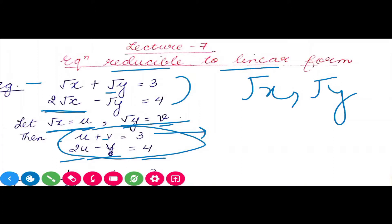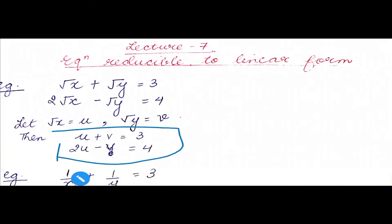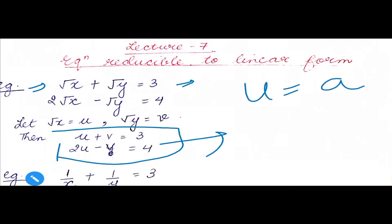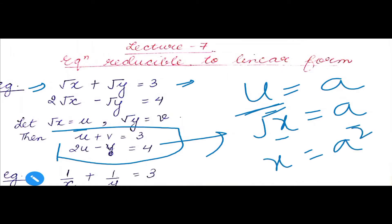When you solve this equation using any method, you will get the values of u and v. But the question asks for x and y. So, suppose you get a value for u — since u was root x, that means root x equals that value. If we square both sides, we get x equals the value squared. Similarly, from v we can find y. We solve the original variables at the end as a final step.